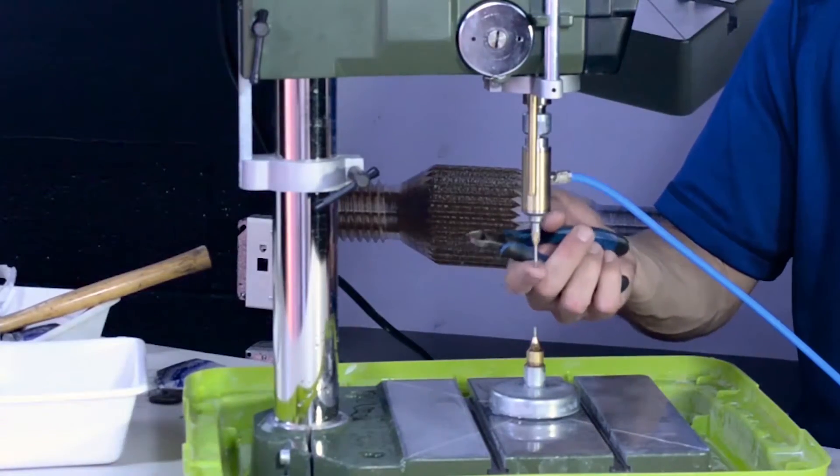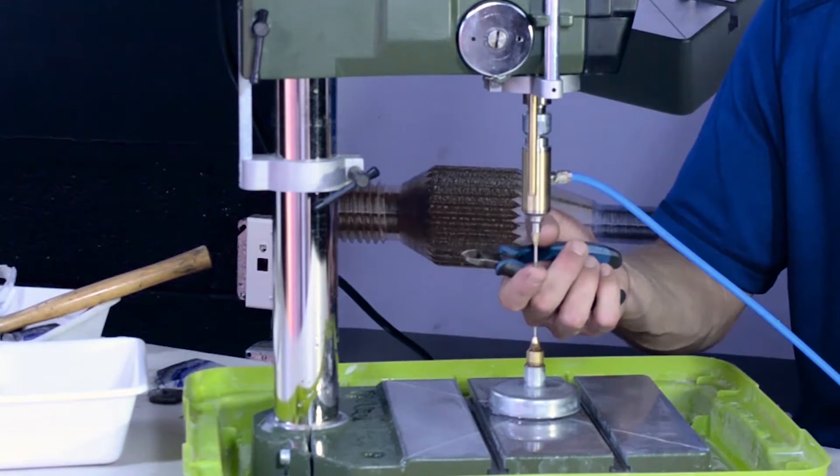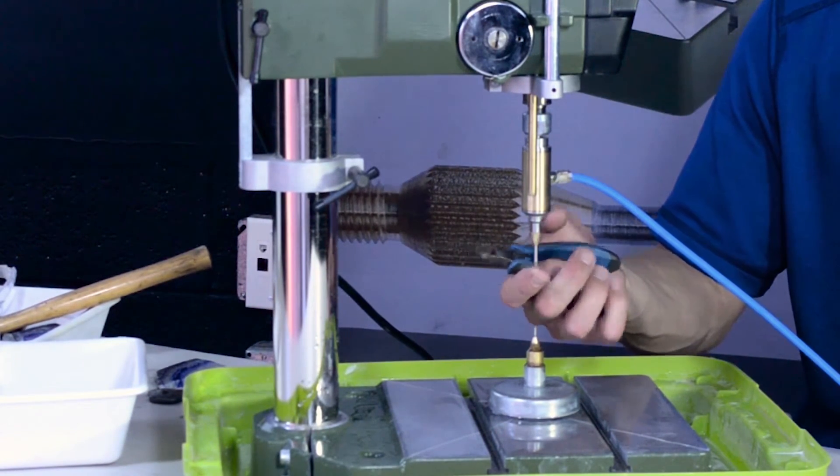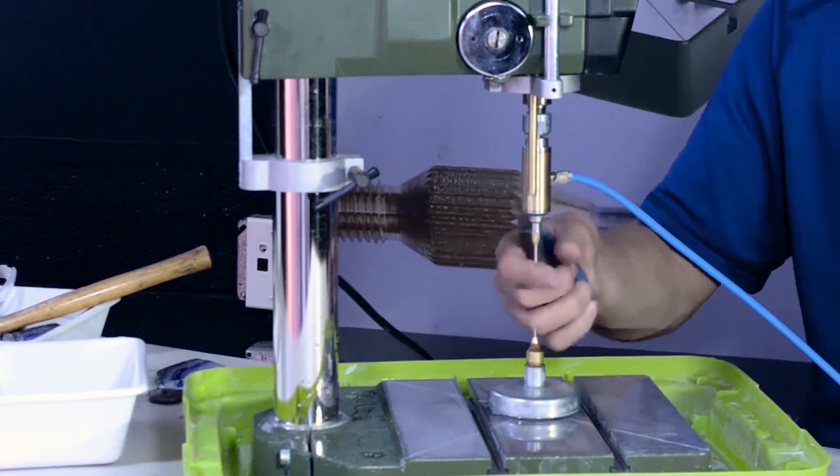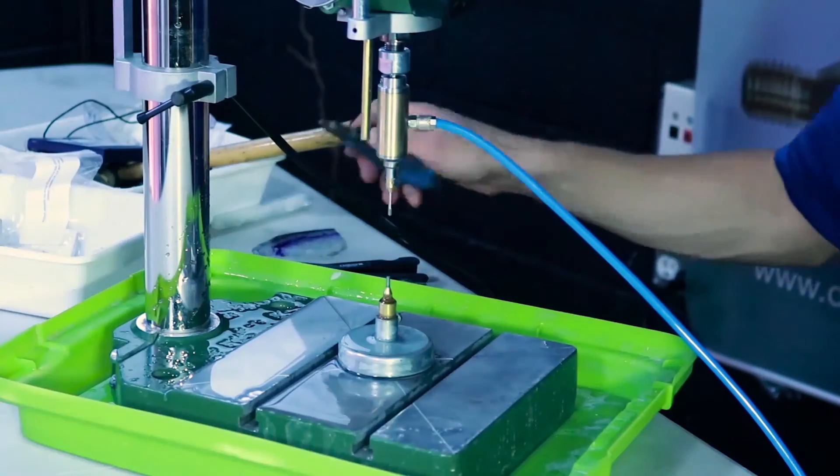When you start noticing a little bit too much runout or play, when that needle gets too long, just take some snips and snip it off, and you'll be back to drilling.